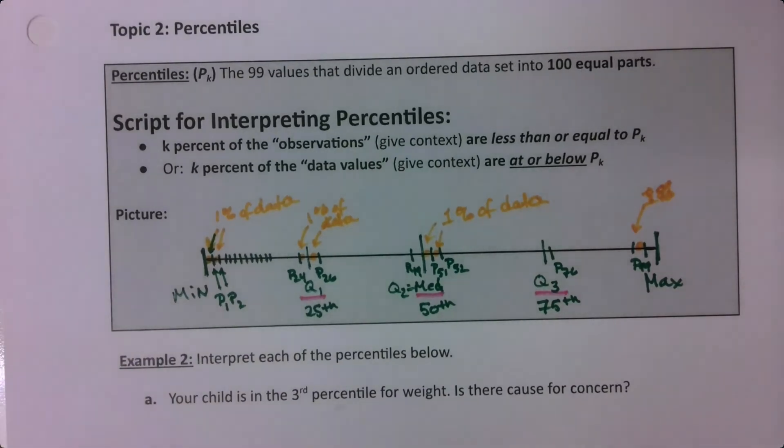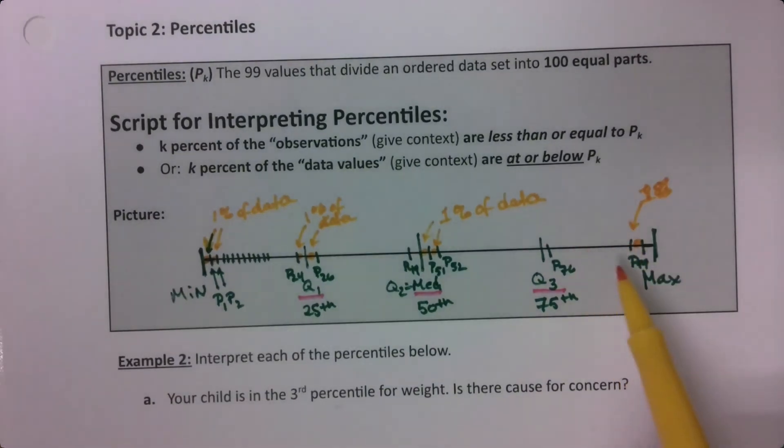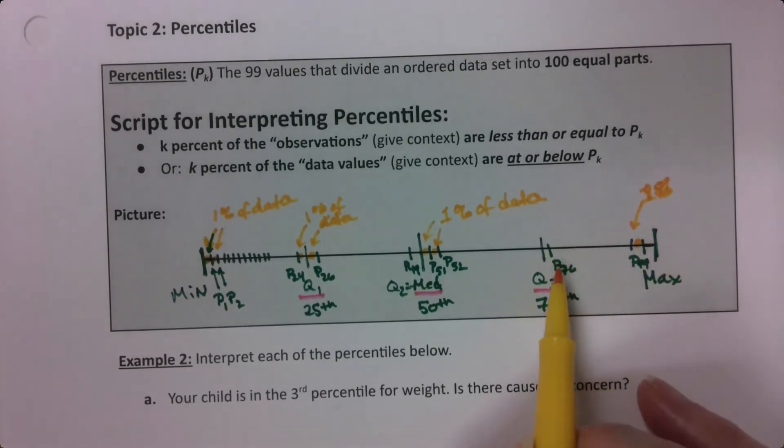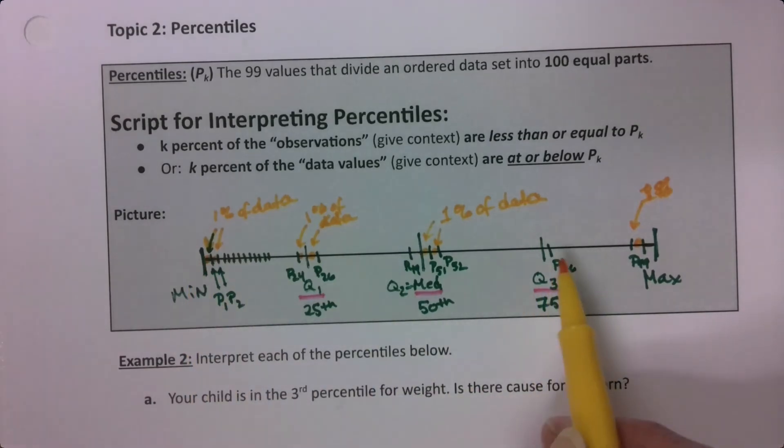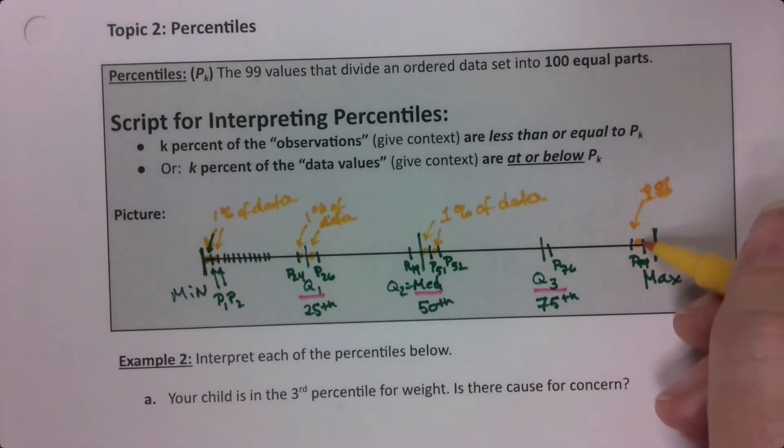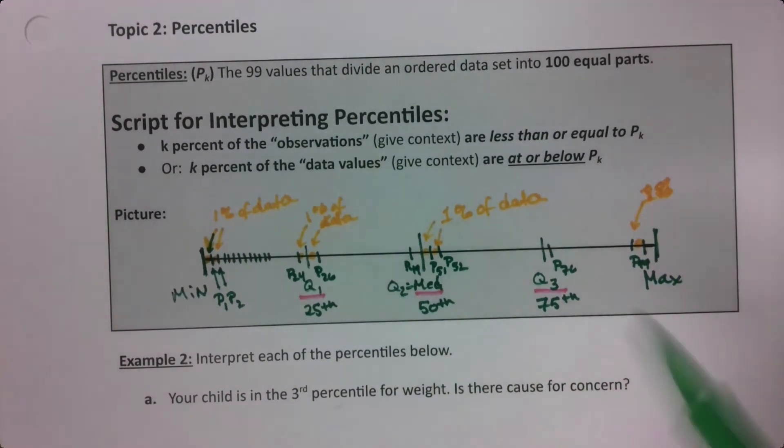But now let's think about the interpretation. If these were test scores, say for like the SAT or something like that, you'd like to be over here in this top quarter, because for example, P76, 76% of the data is below that value. Only 24% is above it. You'd really like to be over here, the 98th and 99th percentile.